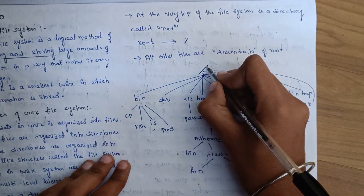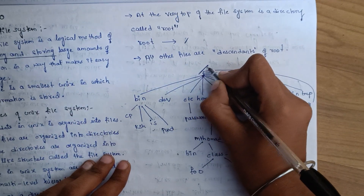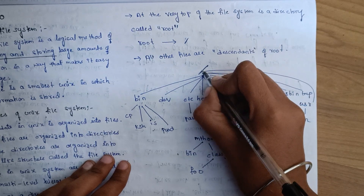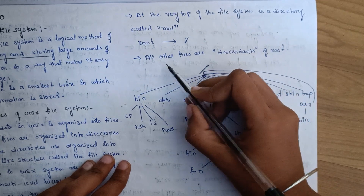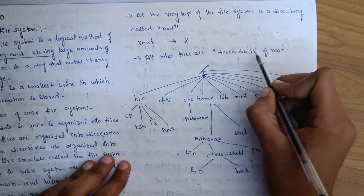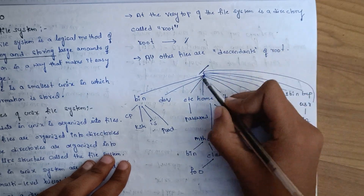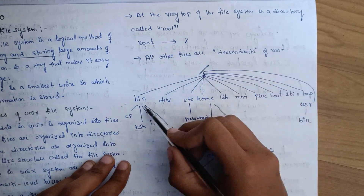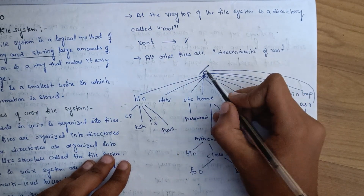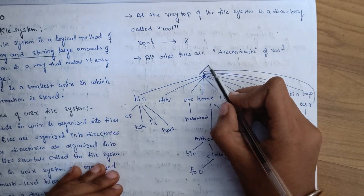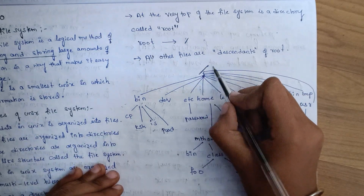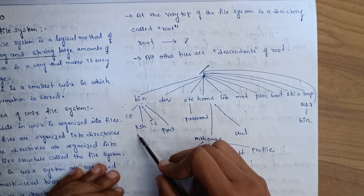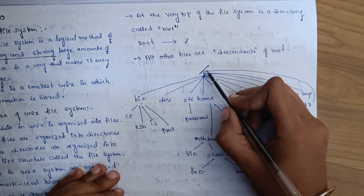We can use the slash for the root. All other files are descendants of root — like children of this root. We can use various subdirectories. There are intermediate nodes and leaf nodes in this tree structure.